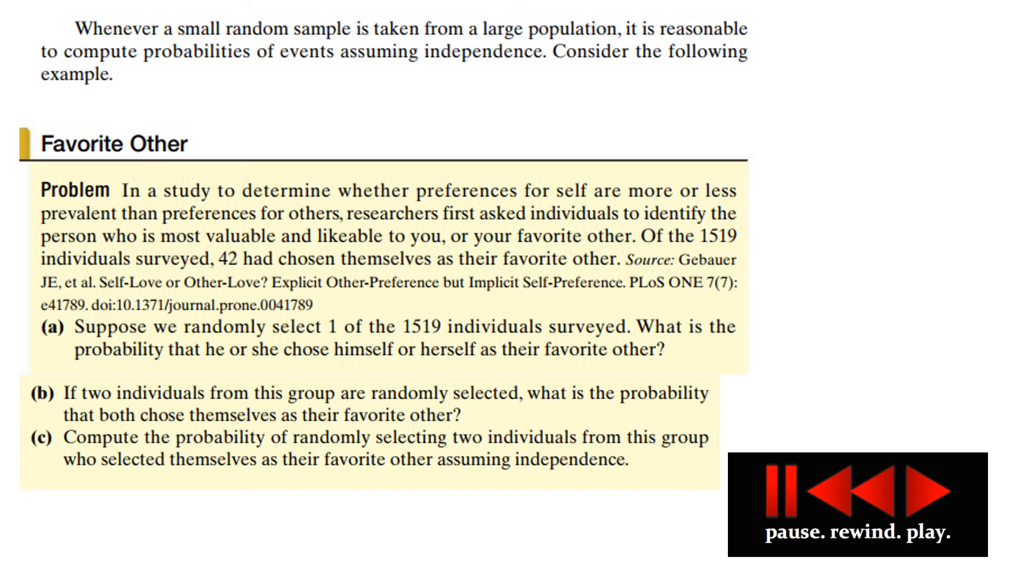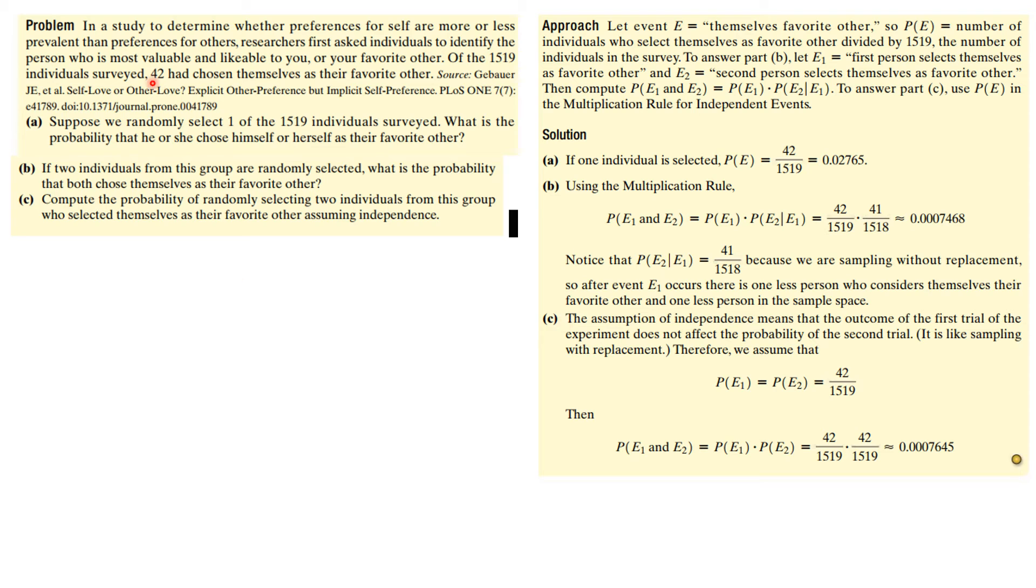Okay, so first of all, we know that it is 42 out of 1519 is the probability of E where E is that they like themselves better than anybody else. So the probability of E1 and E2, there are two different people who do this, it's the probability of E1 times the probability of E2. Now note that this is a dependent probability because the next time you pick, there's only 41 people who have that capability. But now you have 1518. But you see these two numbers actually are very close together. Both the numerator and the denominator are very close together. But this is the exact answer. You multiply those together and you round it off and you get this.